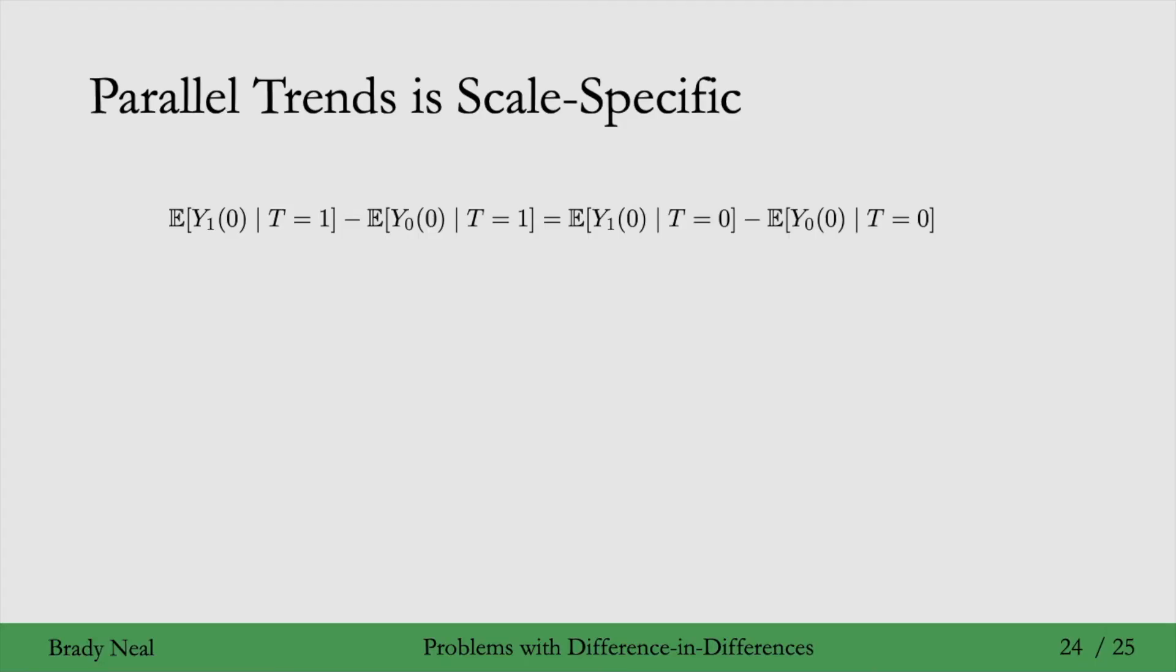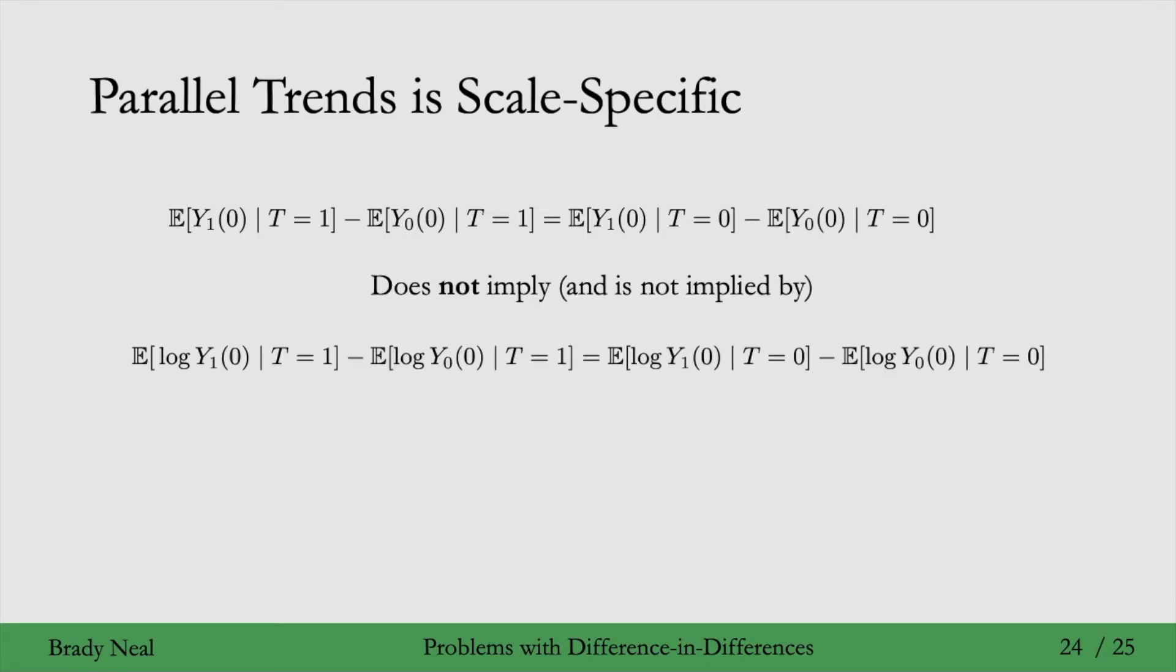Alright, so say that you do have parallel trends satisfied, that's what we have here. But you're interested in your outcome, not quite in the space just Y here. You're interested in a different space, so some transformation of Y. Unfortunately, when you have parallel trends in this space for Y, you don't necessarily have it in transformations of Y. So for example, with log, this is a common transformation you might do. You might take the logarithm of your outcome.